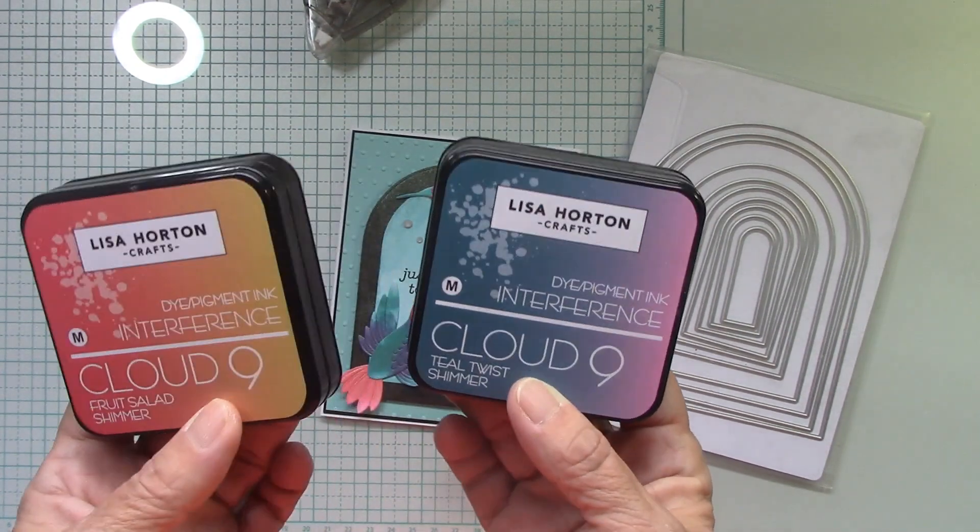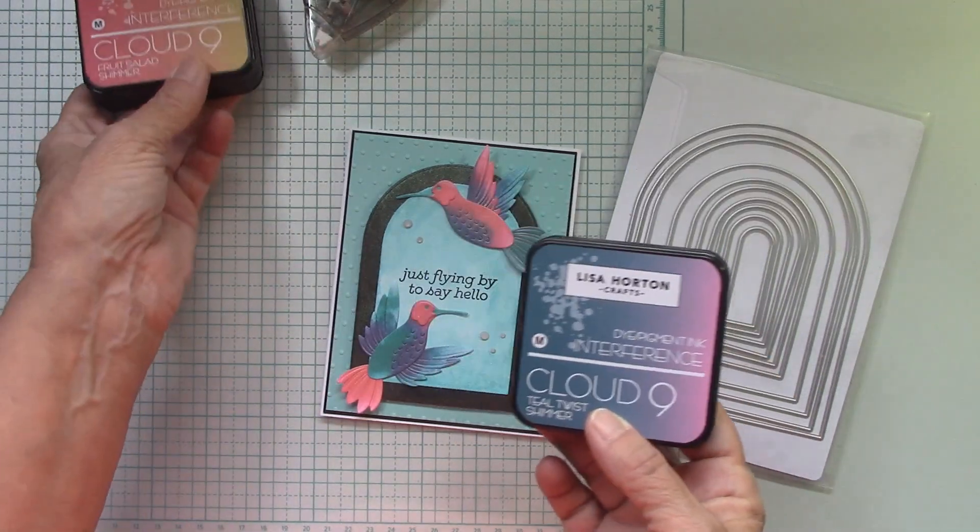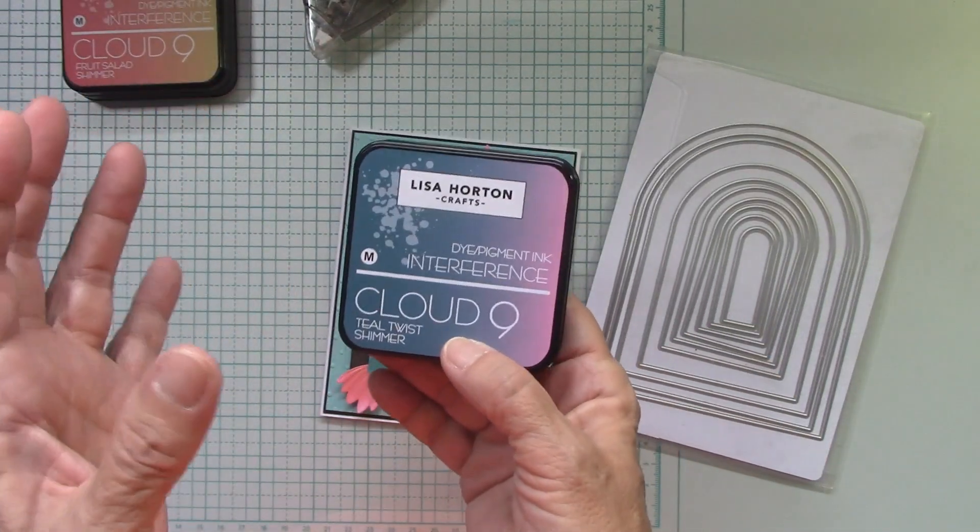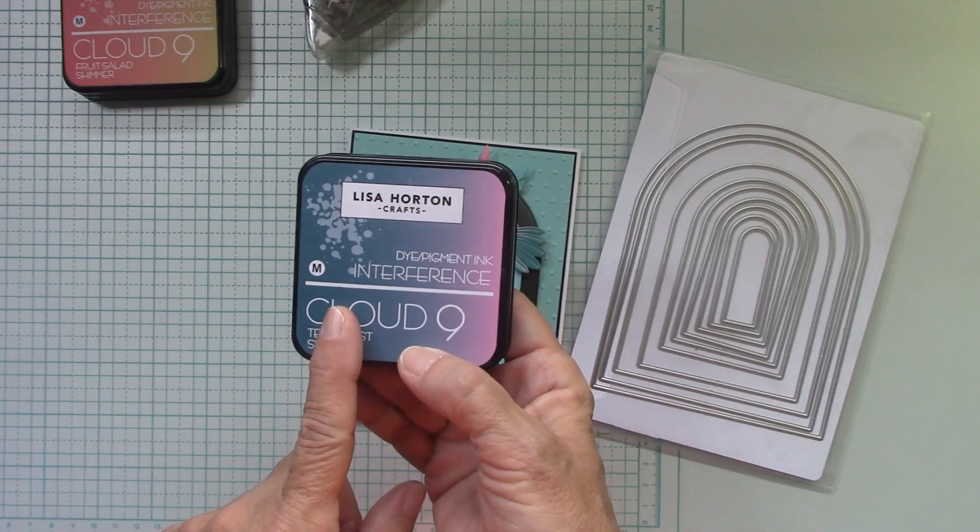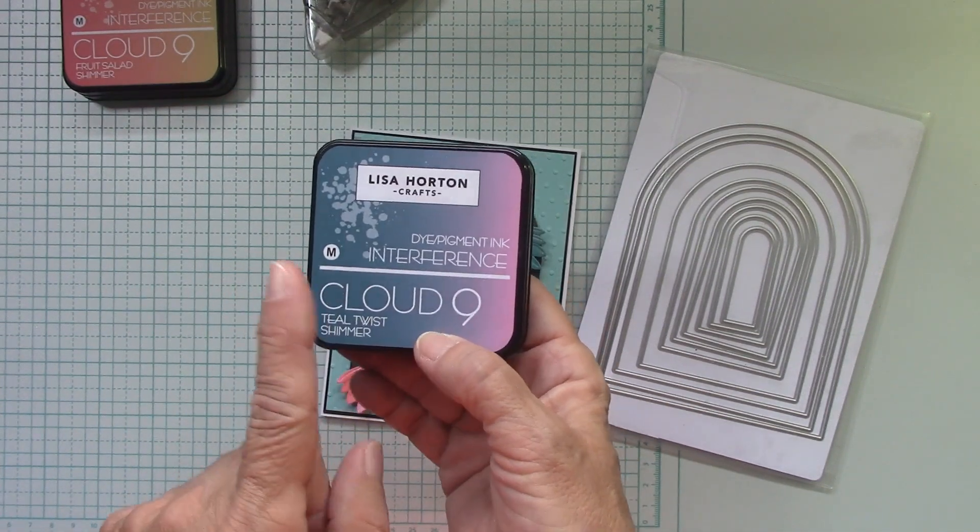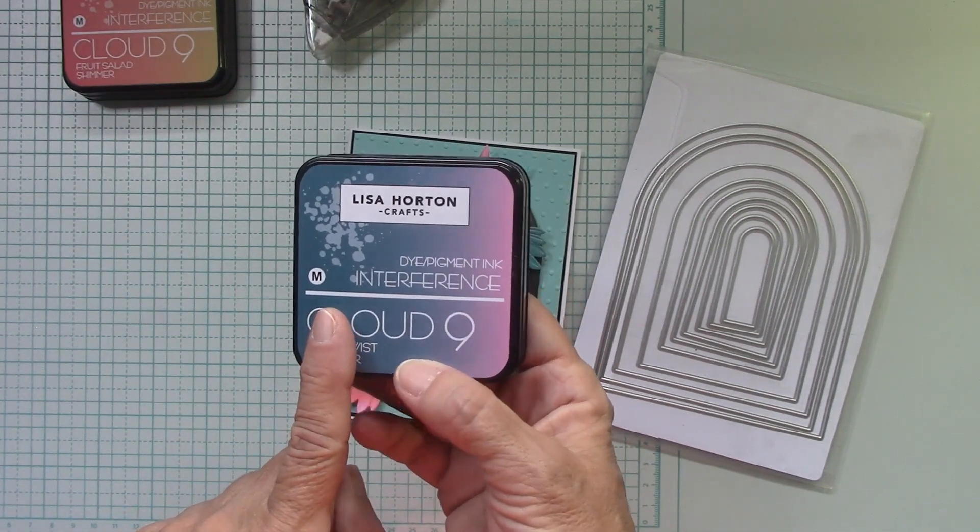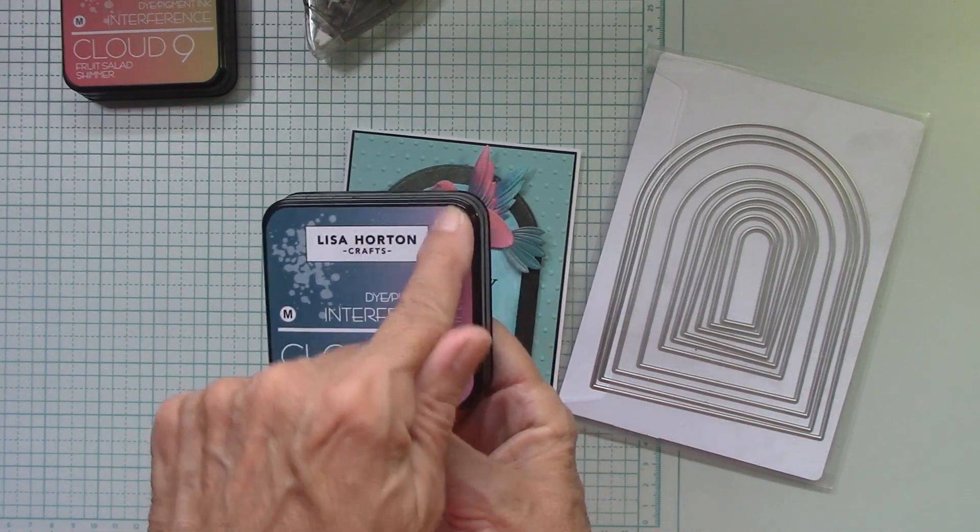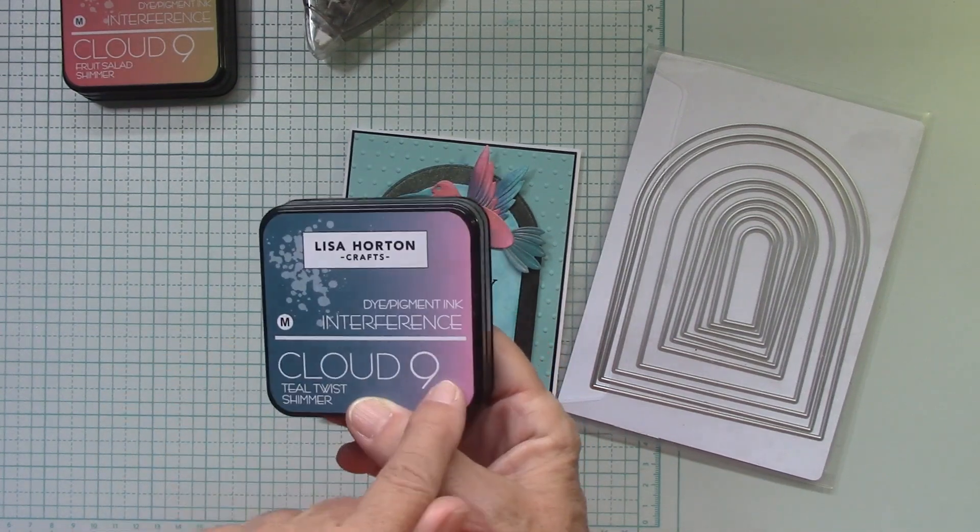you get like four different colors. It's amazing. So always remember that this side is if you put the ink on white paper and then this side is if you put it on black, it will turn this color.